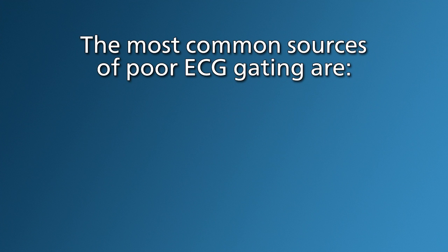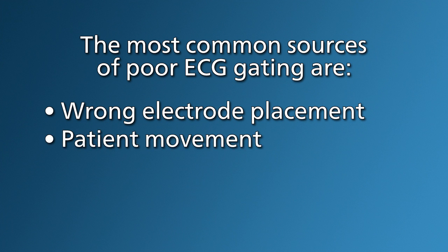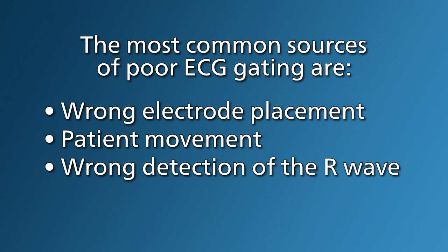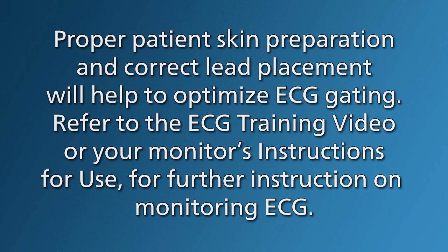The most common sources of poor ECG gating are wrong electrode placement, patient movement, or wrong detection of the R wave. Proper patient skin preparation and correct lead placement will help to optimize ECG gating.